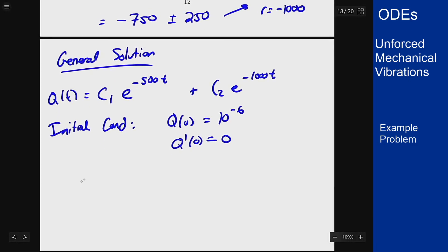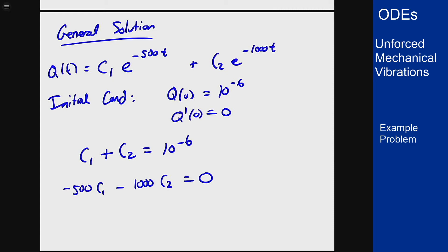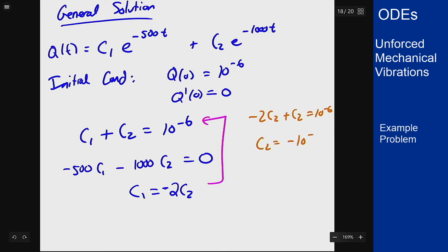So that means that c1 plus c2 is 10 to the minus 6th and if I differentiate negative 500 c1 minus 1,000 c2 is 0. Solving the second equation tells me that c1 is twice c2 with a negative sign on it. Putting that in here tells me that negative 2 c2 plus c2 equals 10 to the minus 6th. So c2 is negative 10 to the minus 6th giving that c1 must be 2 times 10 to the minus 6th.